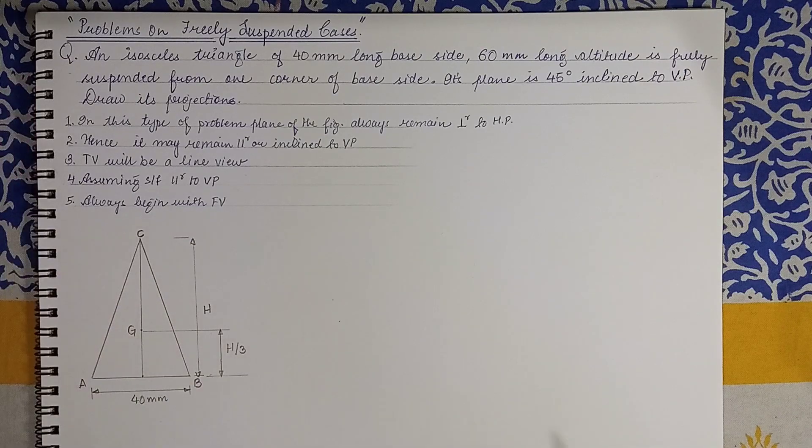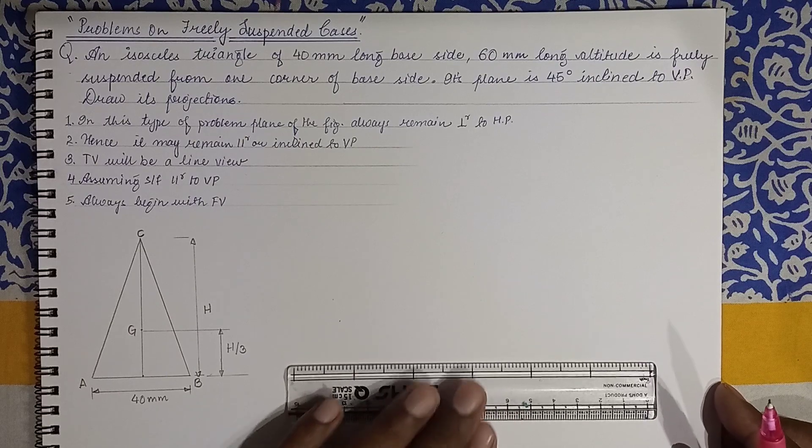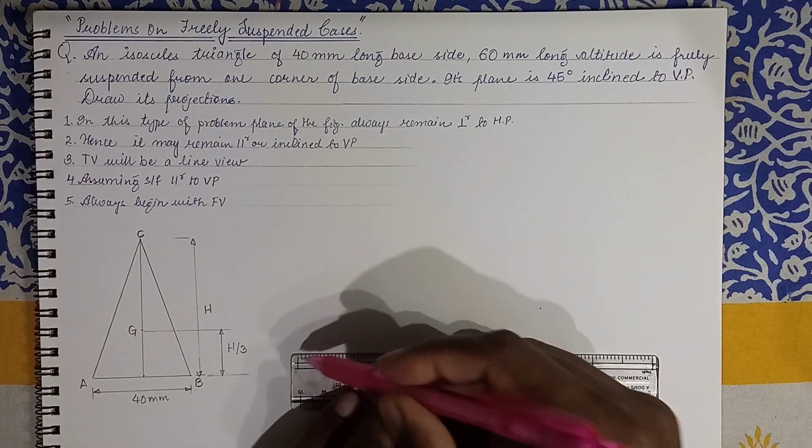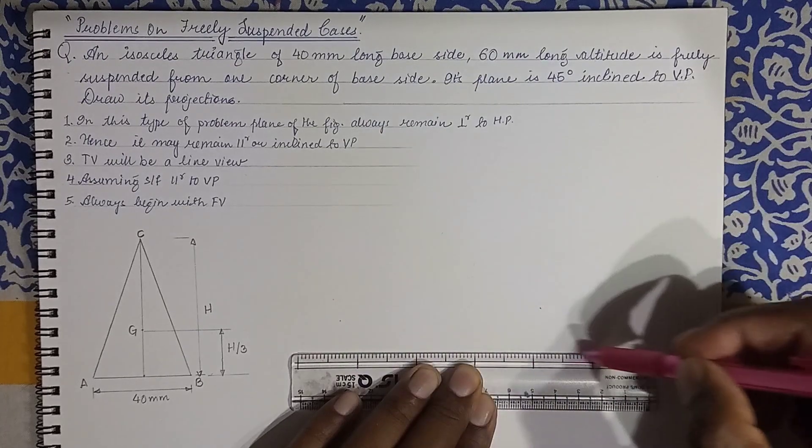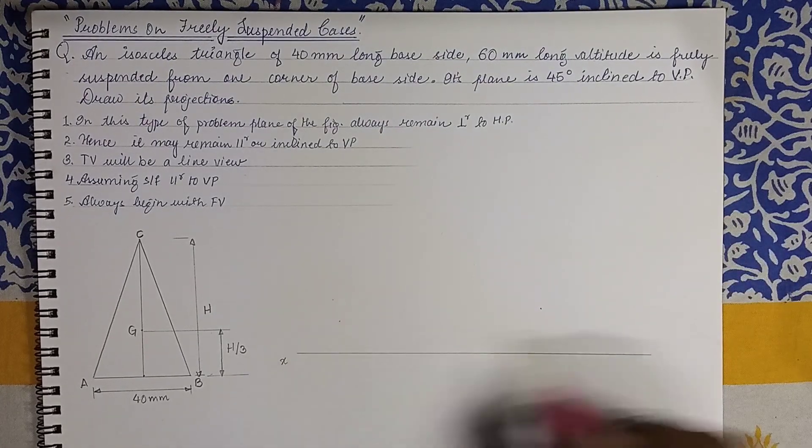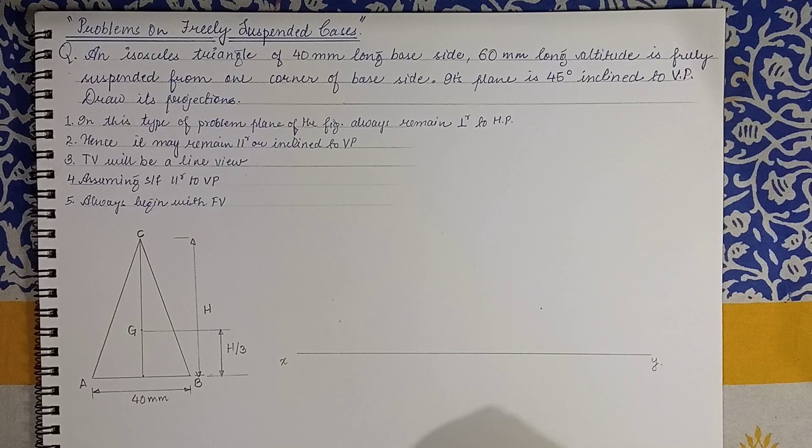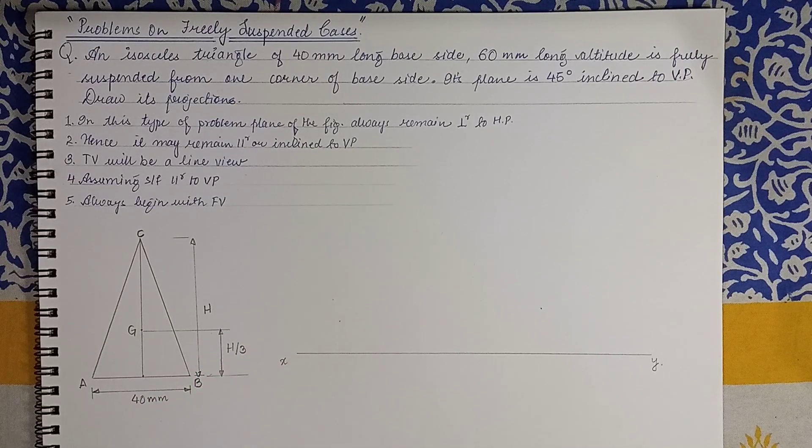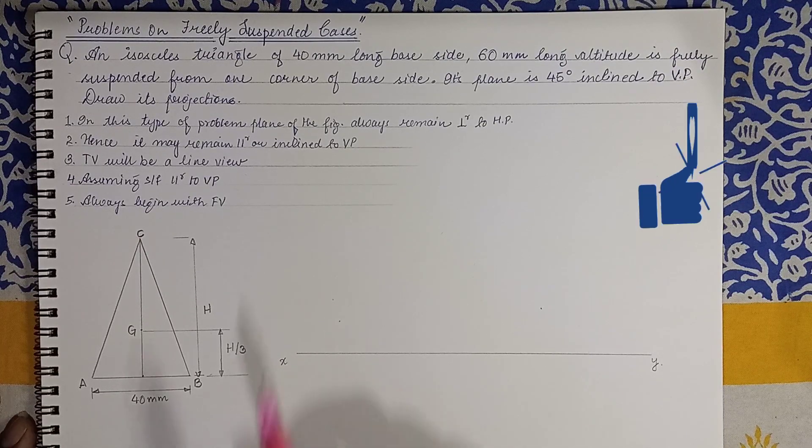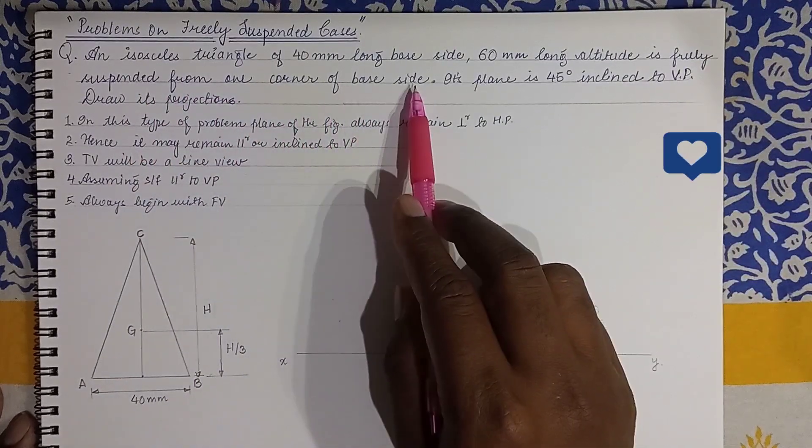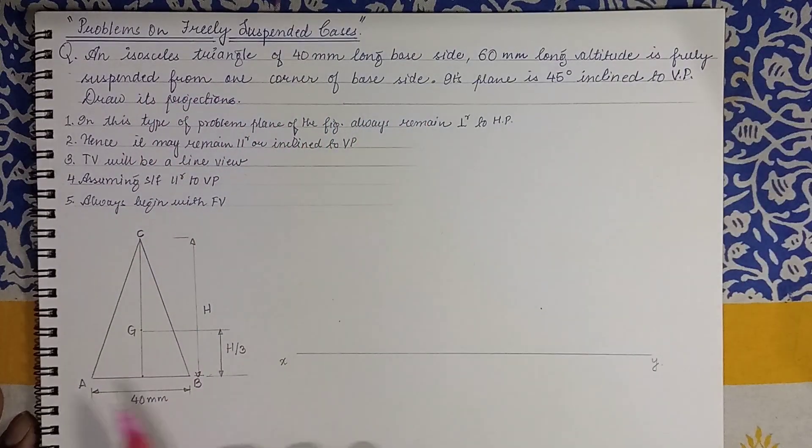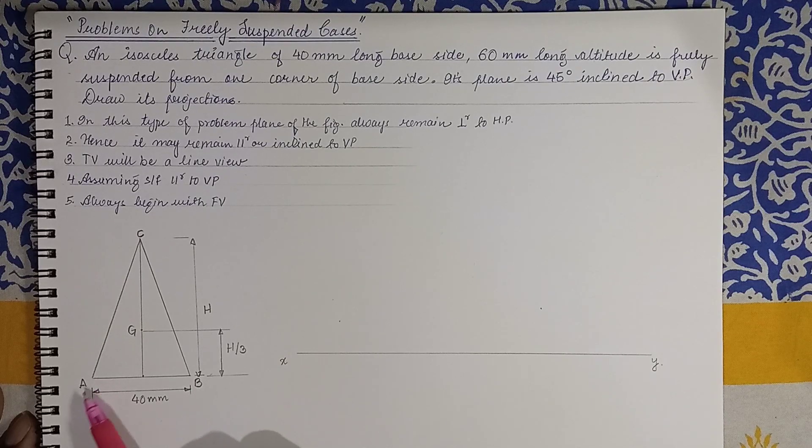So with this we begin the problem. Initially we draw line XY at a comfortable distance. And the biggest challenge is we need to reorient this. For example, we need to hang it—where to hang it? It is suspended from one corner of the base side. So base side is there, so you can make it suspended about A or about B. So it is up to you, anything will do.